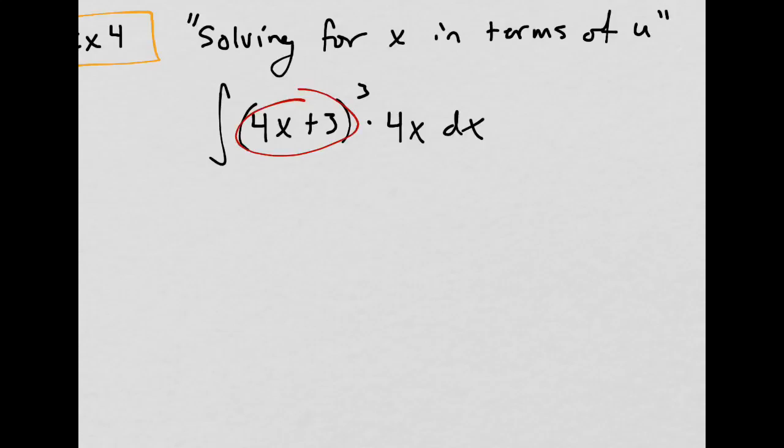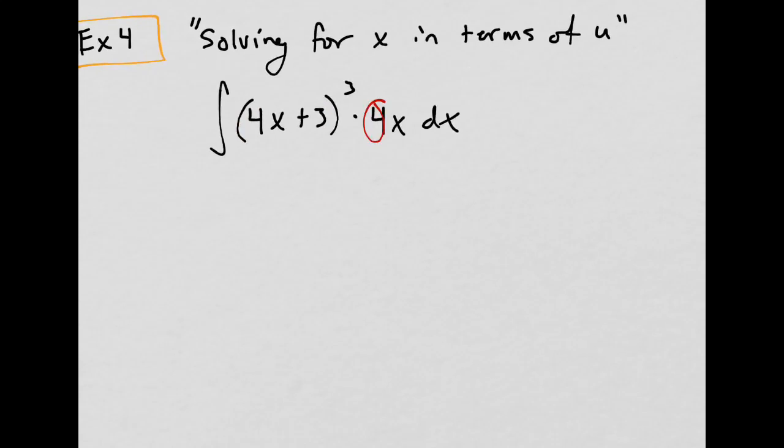Ooh, look at this. If I take the derivative, I don't get rid of that x. Right? The derivative of 4x plus 3 is 4. I get rid of the 4, but not the x. Some people don't know what the heck I'm talking about. But you'll see. Watch.